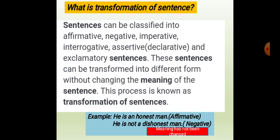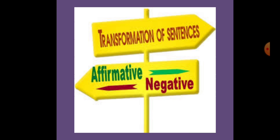Now you see this example. 'He is an honest man' — this is affirmative. If you change it, 'He is not a dishonest man.' You can see the meaning has not been changed. Today I will discuss about transformation of sentences, not conversion of sentences, and how you will change an affirmative sentence into negative without changing the meaning of the original sentence.